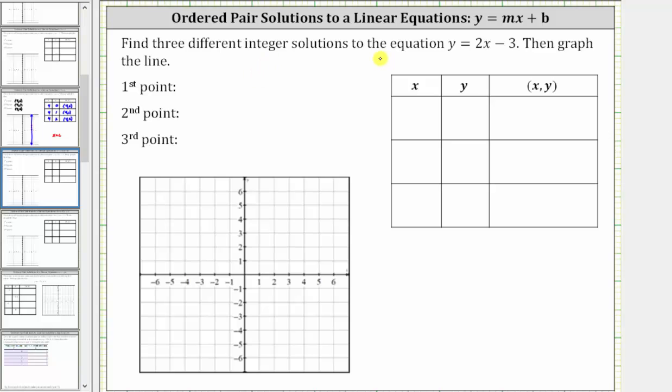We're asked to find three different integer solutions to the equation y equals 2x minus 3, and then graph the line. Each solution is an ordered pair in the form of (x, y) that satisfies the equation or makes the equation true.